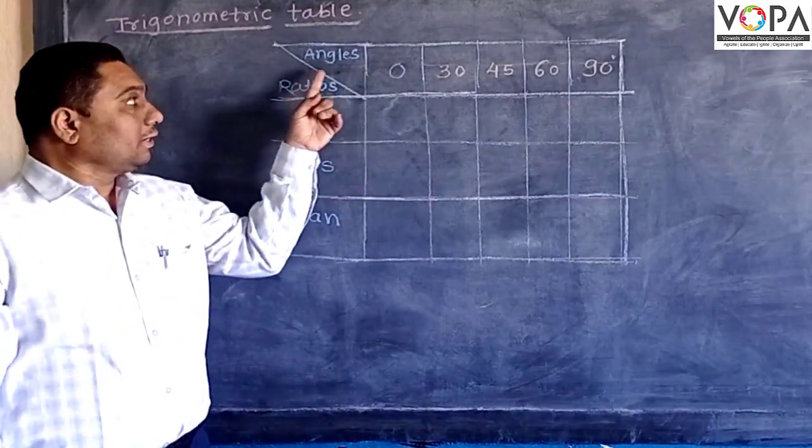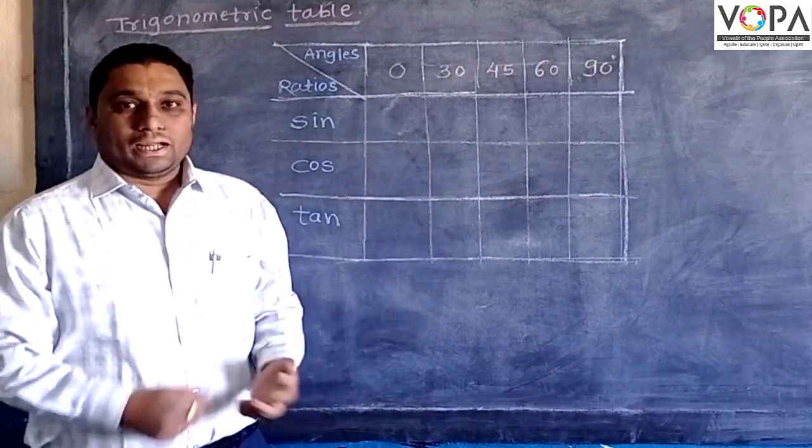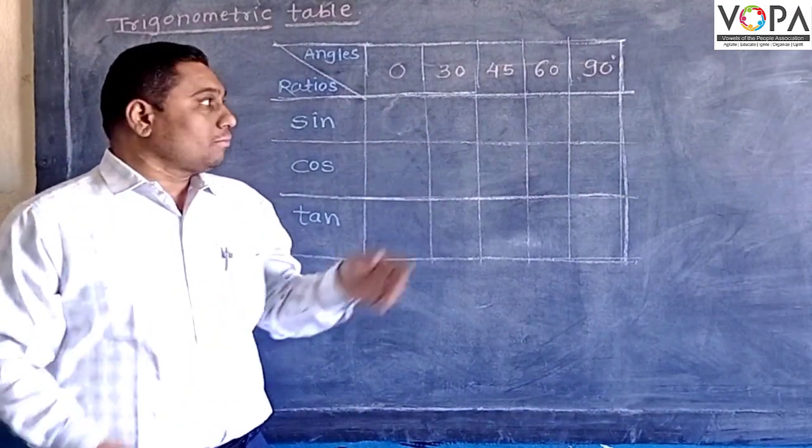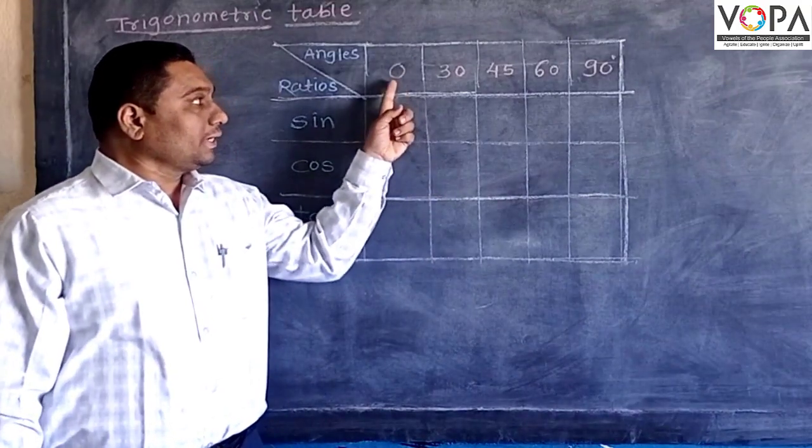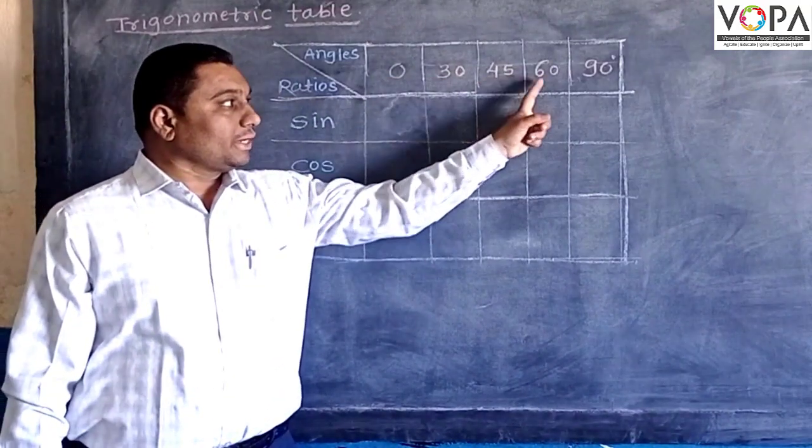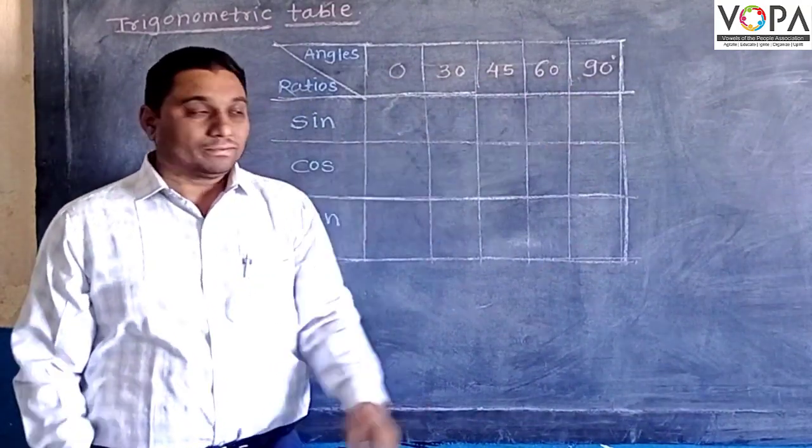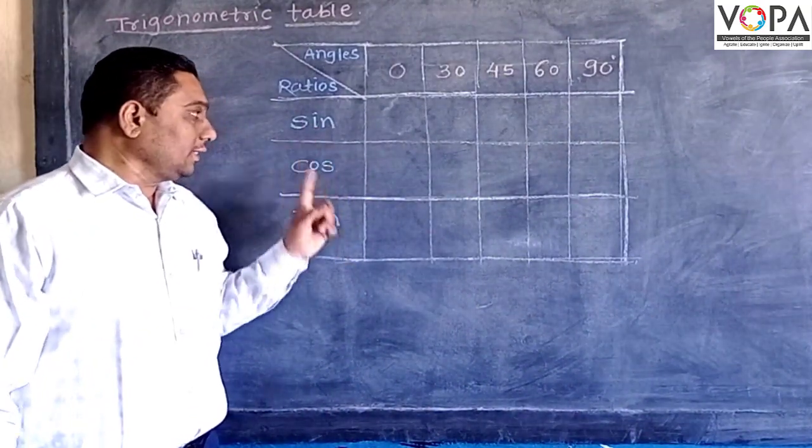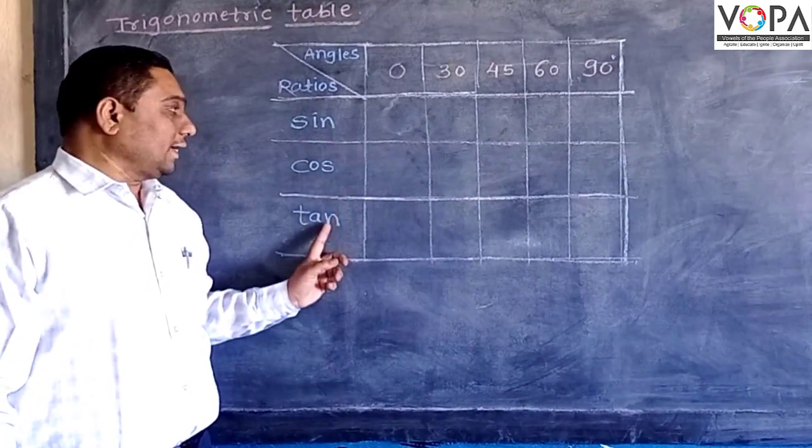Let's see these angles that we earlier studied: 0 degree, 30 degree, 45 degree, 60 degree, and 90 degree. And here are three trigonometric ratios: sine, cosine, and tangent.